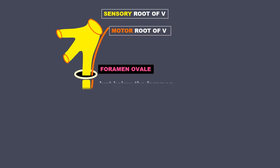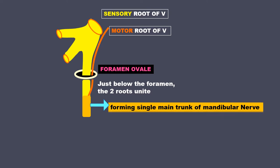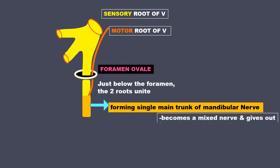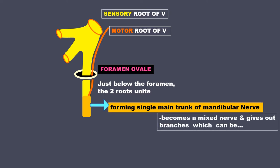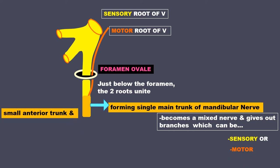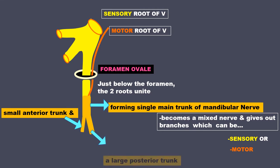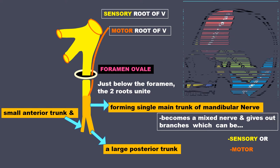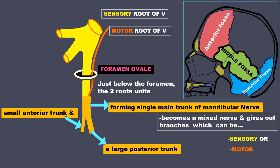Just below the foramen, the two roots unite forming a single main trunk of the mandibular nerve, which becomes a mixed nerve and gives out branches that can be either sensory or motor. It then forms a small anterior trunk and a larger posterior trunk. In this image, you can see the middle cranial fossa and the approximate position of the mandibular nerve coming out through the foramen ovale.